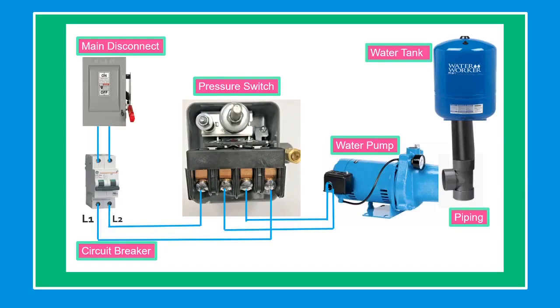The main disconnect is used to shut off the entire unit or circuit. The circuit breaker is designed to protect the circuit from short circuit and ground fault circuit interruption.